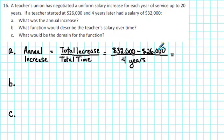$32,000 minus $26,000 is $6,000, and $6,000 divided by four is $1,500, so the annual increase was $1,500 per year.